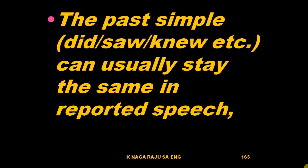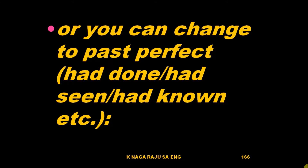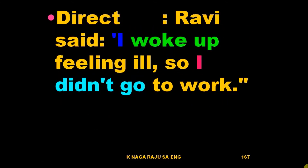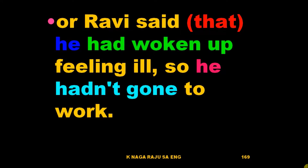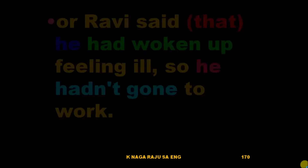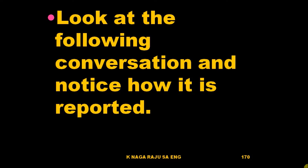The past simple — did, saw, went, etc. — can usually stay the same in reported speech, or you can change it to the past perfect — had done, had seen, had known. Direct: 'Ravi said I woke up feeling ill so I didn't go to work.' Reported: 'Ravi said that he woke up feeling ill so he didn't go to work.' You can also say: 'Ravi said that he had woken up feeling ill so he hadn't gone to work.'